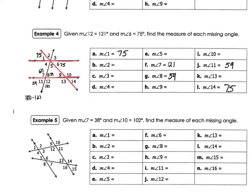Now working down in the bottom right group — angles nine, ten, thirteen, and fourteen. We know angle 14 is 75, so the vertical angle, angle nine, is also 75. Doing 180 minus 75 gives us 105, so angle ten is 105 and angle thirteen is 105.